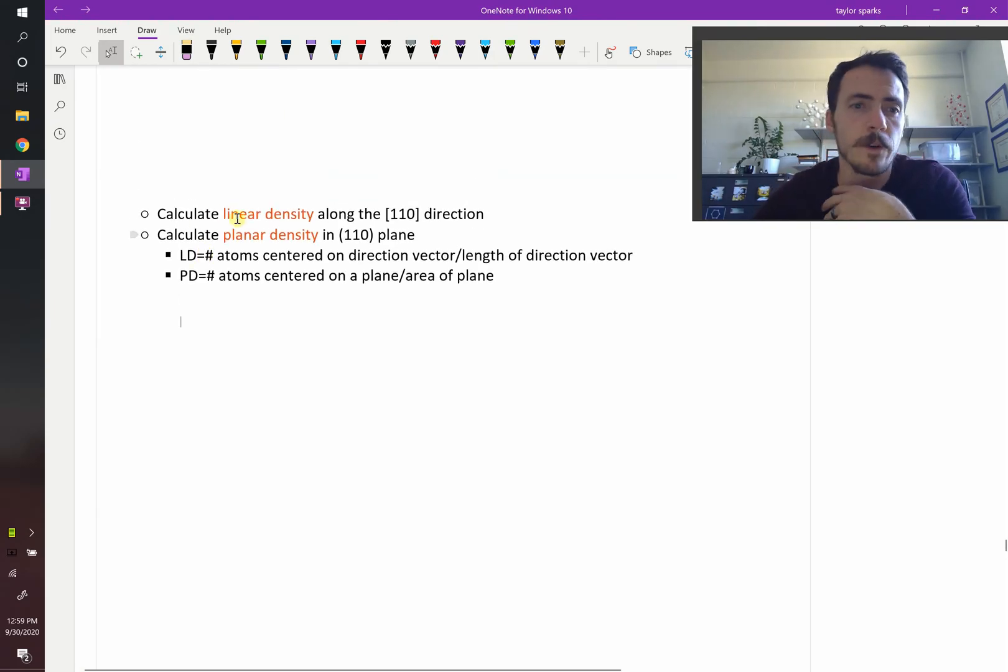For example, consider this question that says calculate the linear density along the 110 direction or calculate the planar density along the 110 plane. So the linear density is defined as the number of atoms centered on a direction or vector per the length of that direction vector, so however many atoms you're going to hit along that line divided by how long that line was. And then planar density is the number of atoms centered on a plane over the area of that plane.